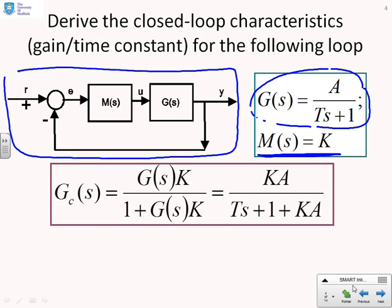So there's the relationship. You get the closed-loop transfer function given as GK over 1 plus GK. If I substitute in the numbers, this is what I get: KA over Ts plus 1 plus KA.